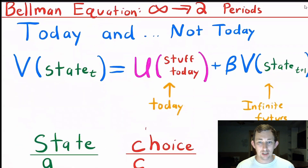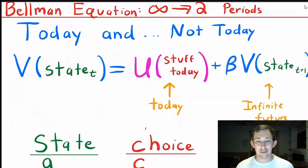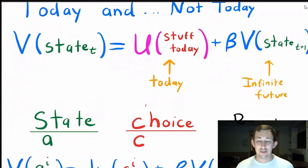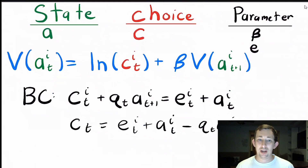To form the Bellman equation, our goal is basically to take an infinite-period problem like we saw above and turn it into two periods: today and the rest of the future, which we just put at the end. So we set up a function of state variables equal to some utility function u of stuff today, plus beta — our time discount factor — times that same value function of the state variable tomorrow for the infinite future part.